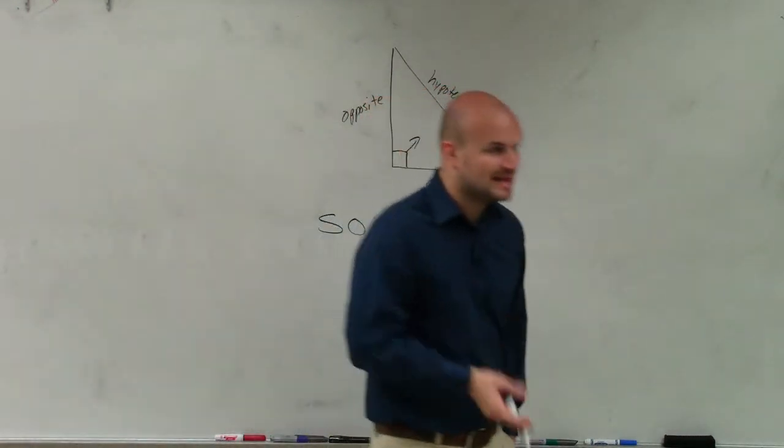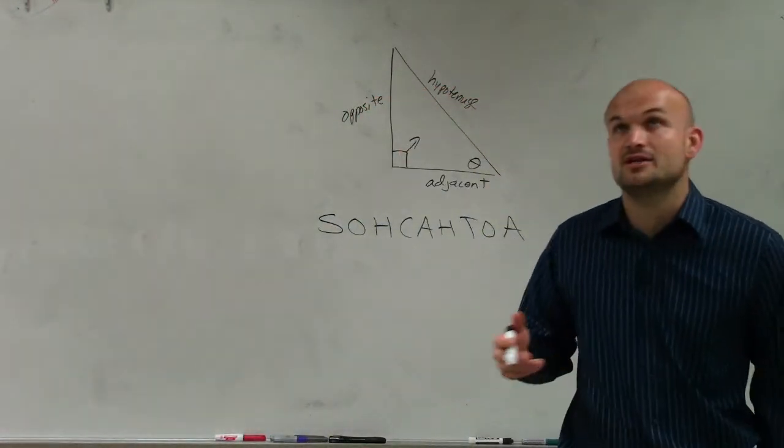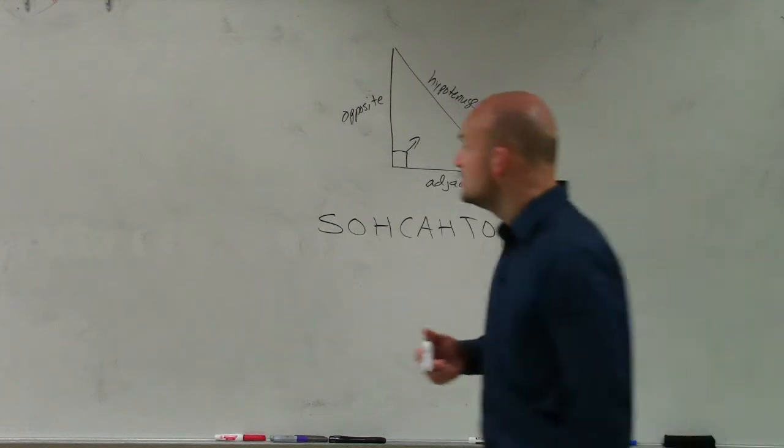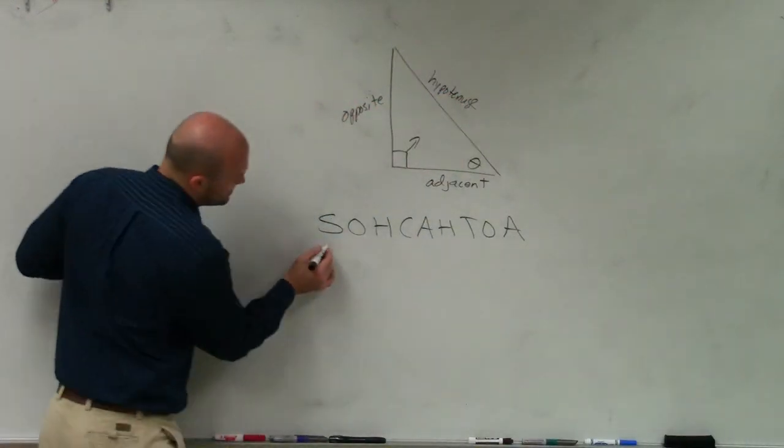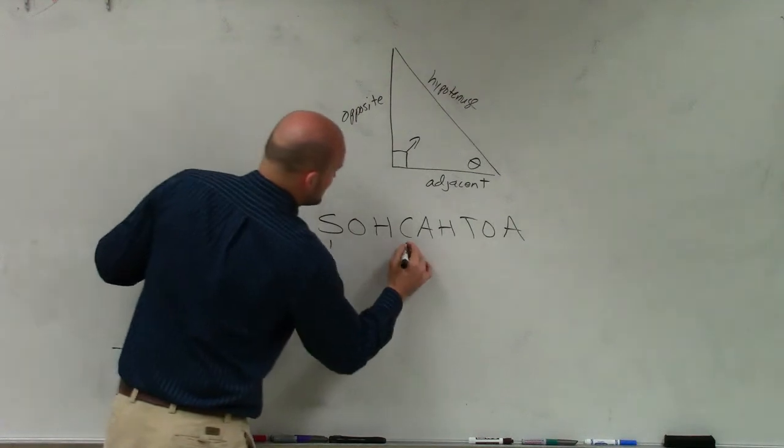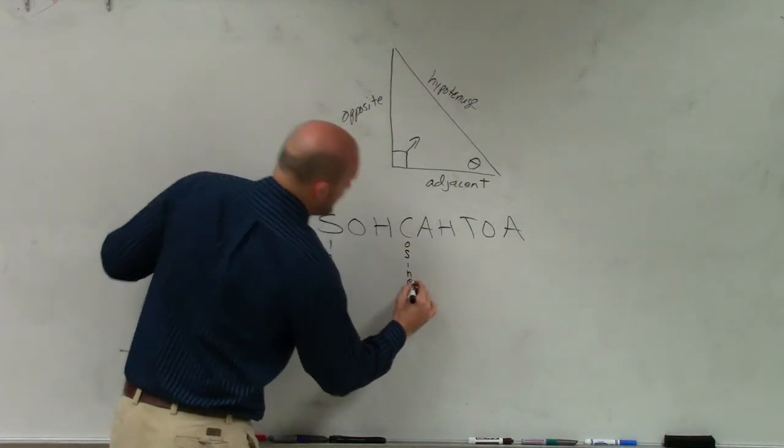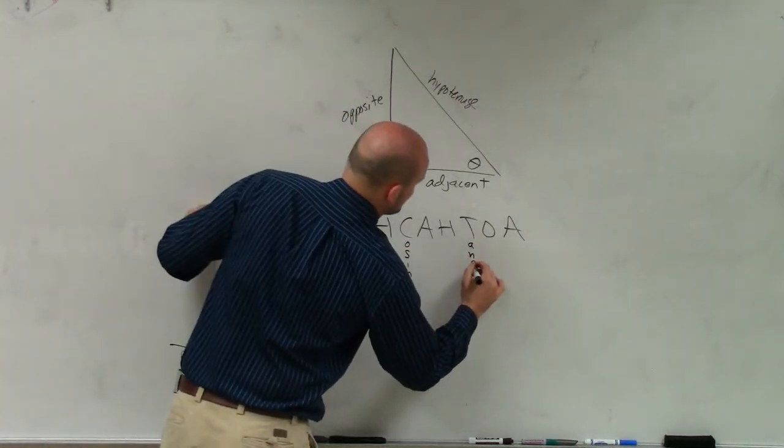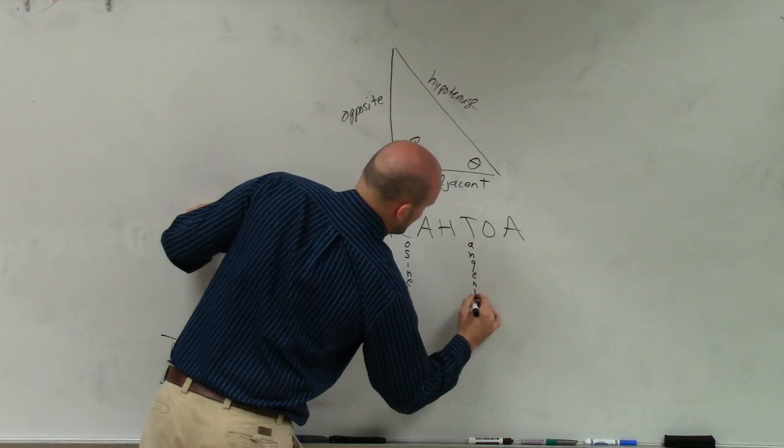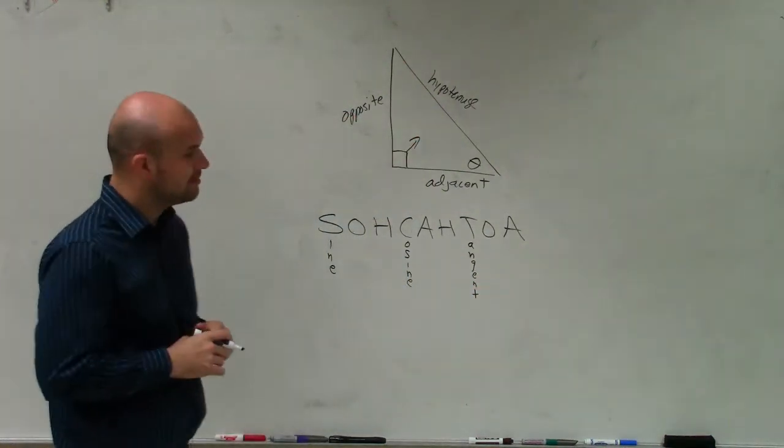Now, what is all these letters mean? All right, SOH CAH TOA. SOH CAH TOA, this just represents sine, this represents cosine, and this represents tangent.